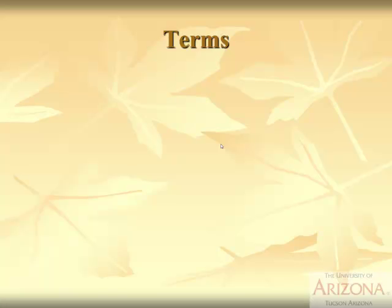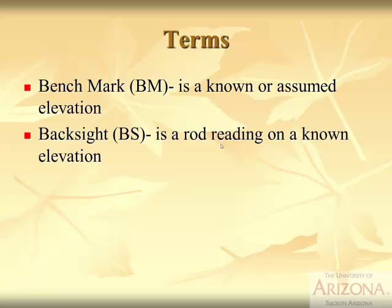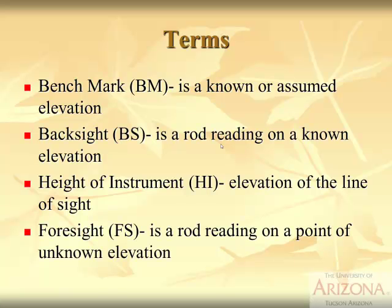Key terms for surveying: A benchmark is a known or assumed elevation. A backsight is a rod reading on a known elevation — it's the first reading we take. HI stands for height of the instrument, also called the elevation of the line of sight, because it represents the instrument's elevation above sea level, not just above the ground. A foresight is a rod reading on a point of unknown elevation.